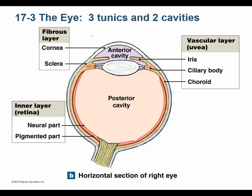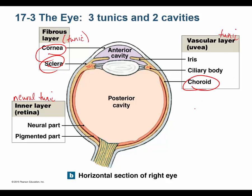This is really all anatomy showing you the tunics, or layers, of the eye. Some books call them the fibrous tunic, the vascular tunic, and the neural tunic. The fibrous tunic is the sclera and the transparent cornea continuous with it. The vascular tunic is the choroid. And the neural tunic is the retina.